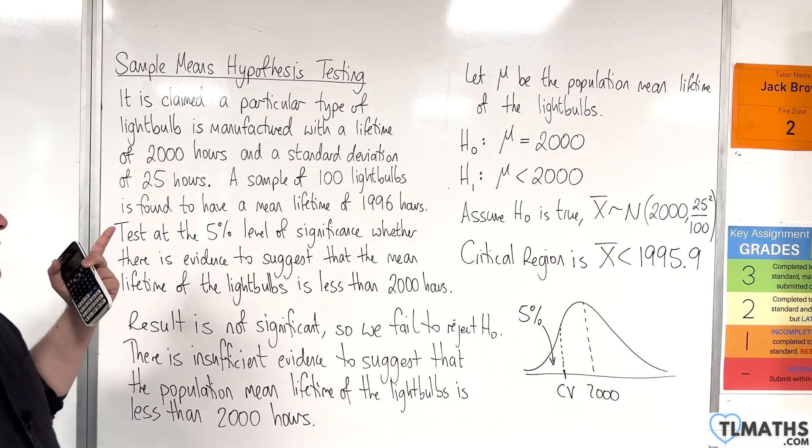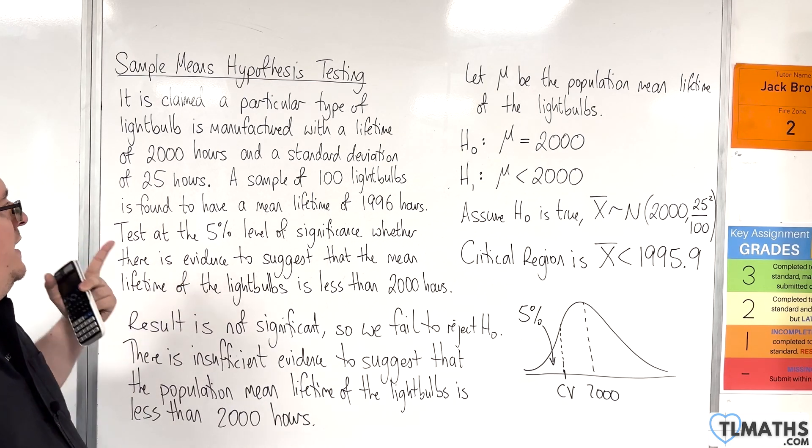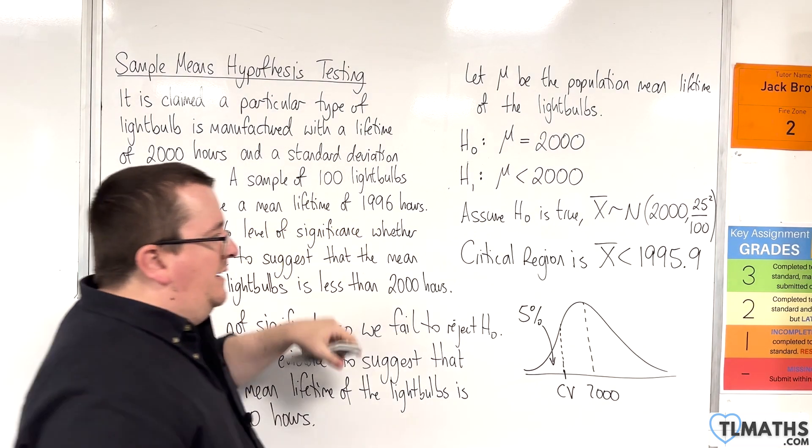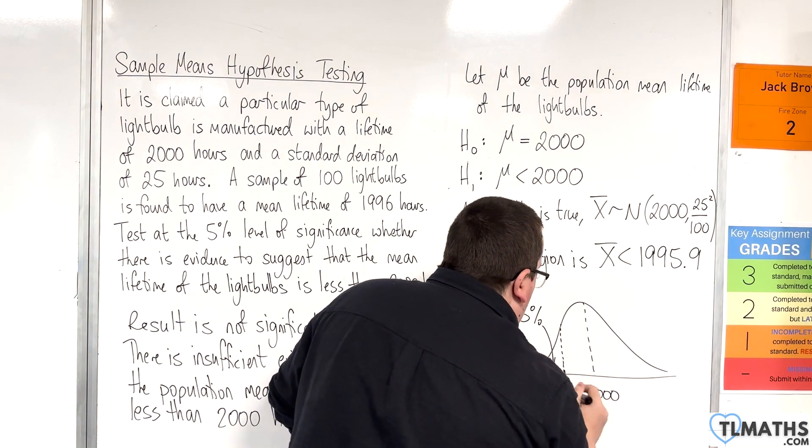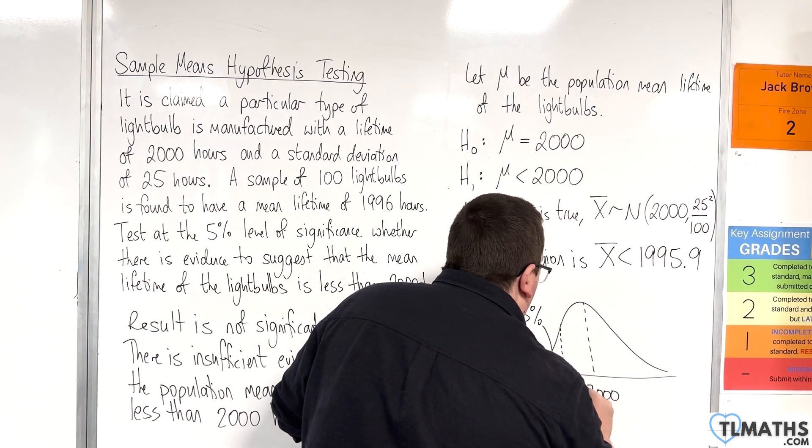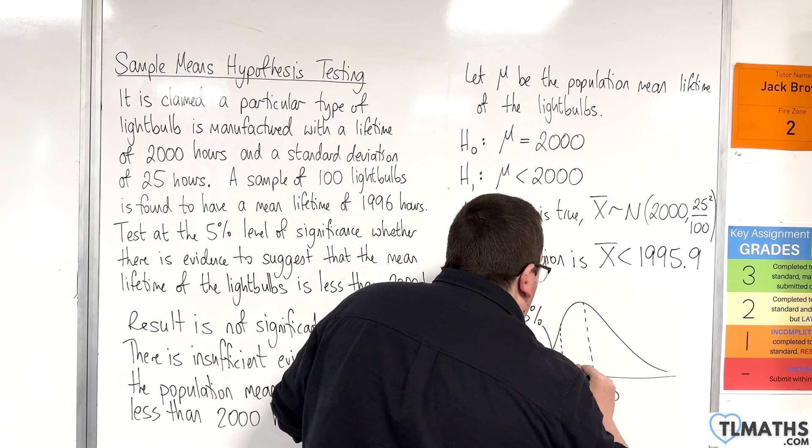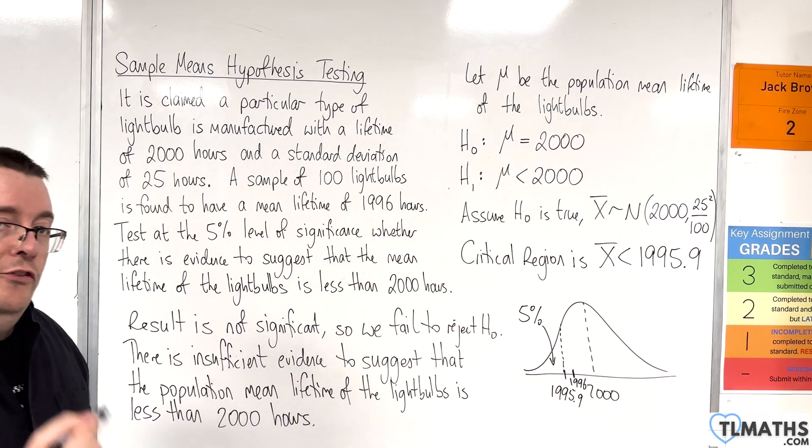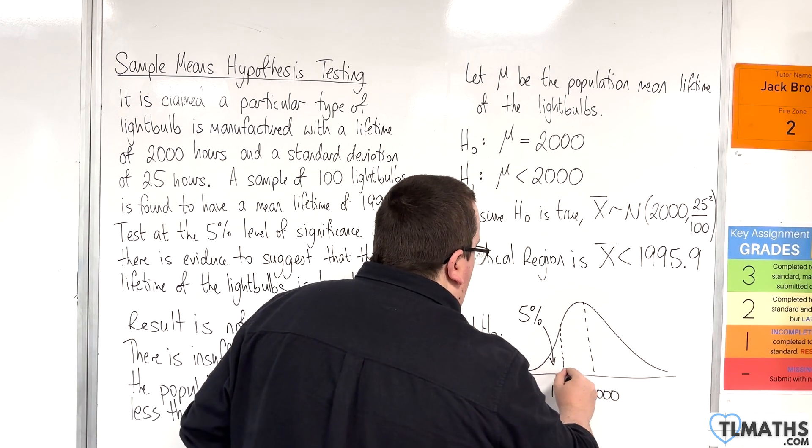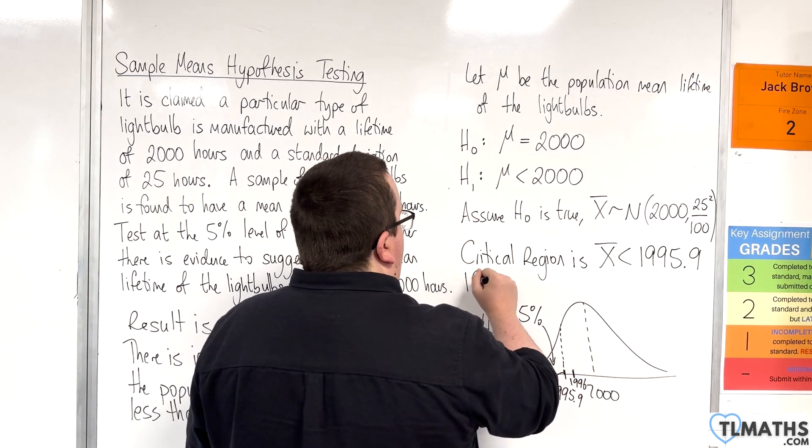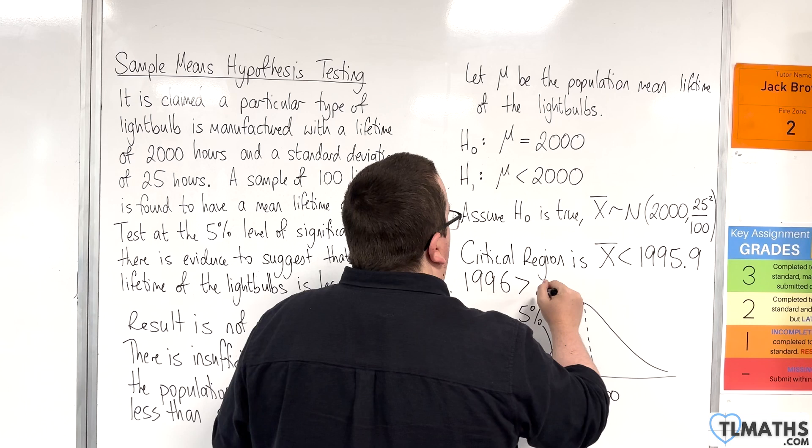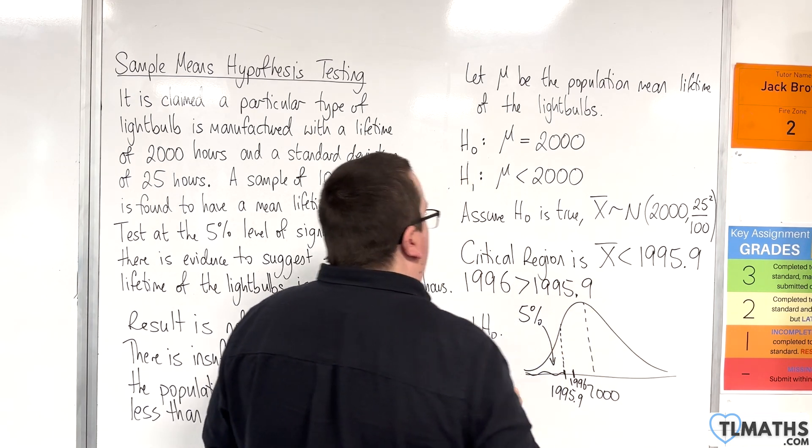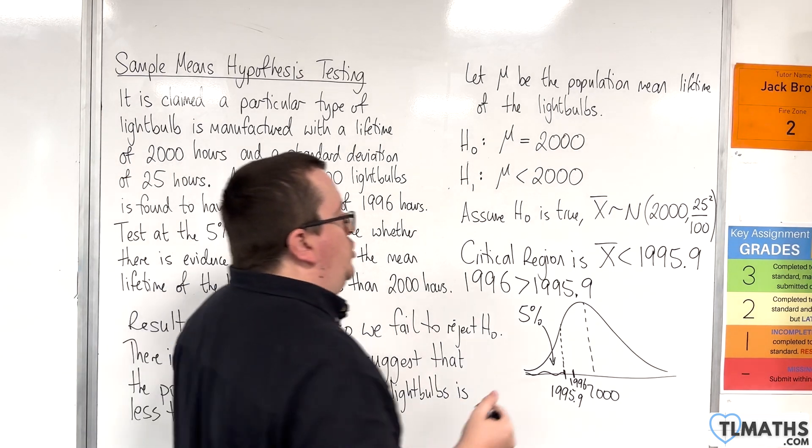Now, the sample mean that we got in the question was 1,996. So, this is 1,995.9 and this is 1,996. So, it's not in the critical region. This is the critical region. So, 1,996 is greater than 1,995.9. So, it is not in the critical region.